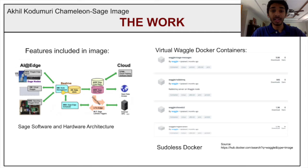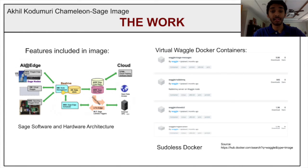Virtual Waggle is one of the services that Sage provides users and is a feature included in this image. Virtual Waggle is a programming environment where users can build and test edge processing code in an environment that mimics Sage nodes. Users can also use Virtual Waggle to test their machine learning algorithms and resolve any potential issues before deploying them onto a Sage node. This image pulls Docker images published and made available on Docker Hub, which is an online repository for software containers. The Chameleon Sage image pulls the most recent version of Virtual Waggle from the Sage repository for use.